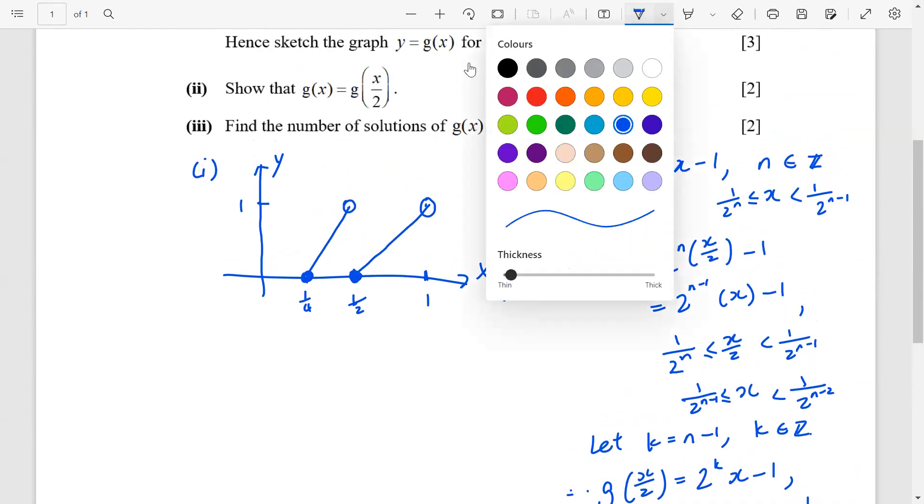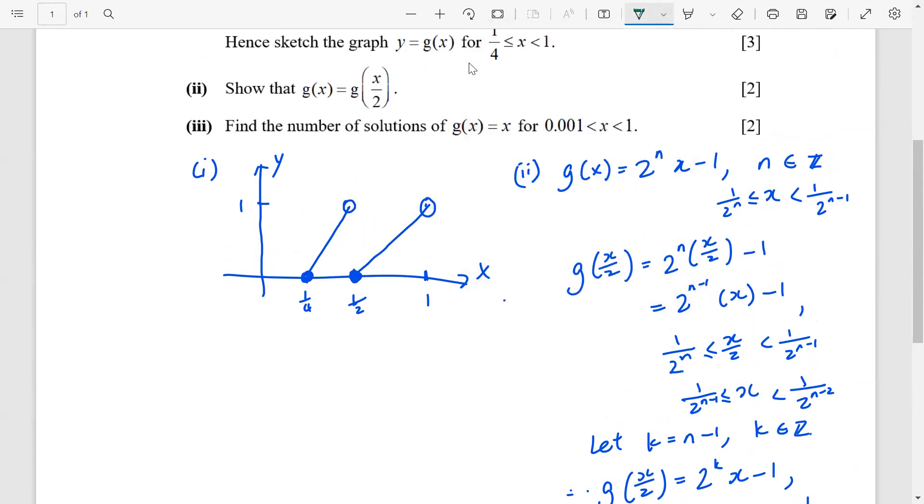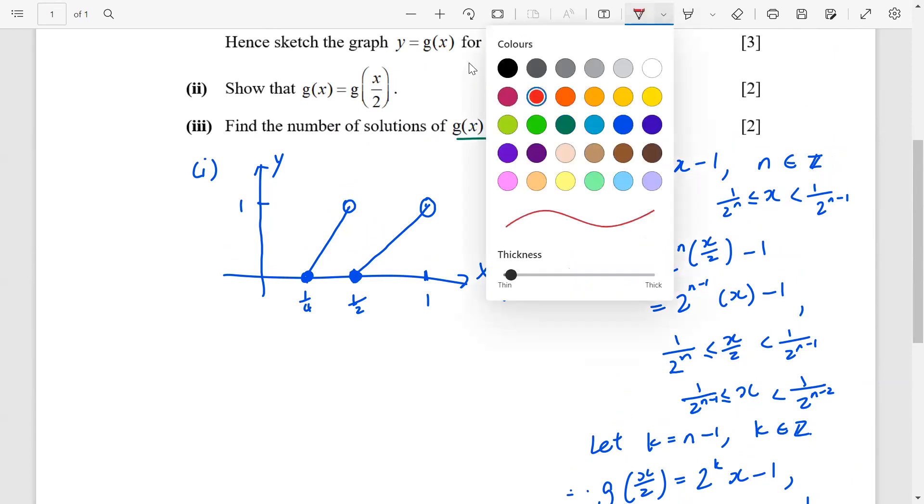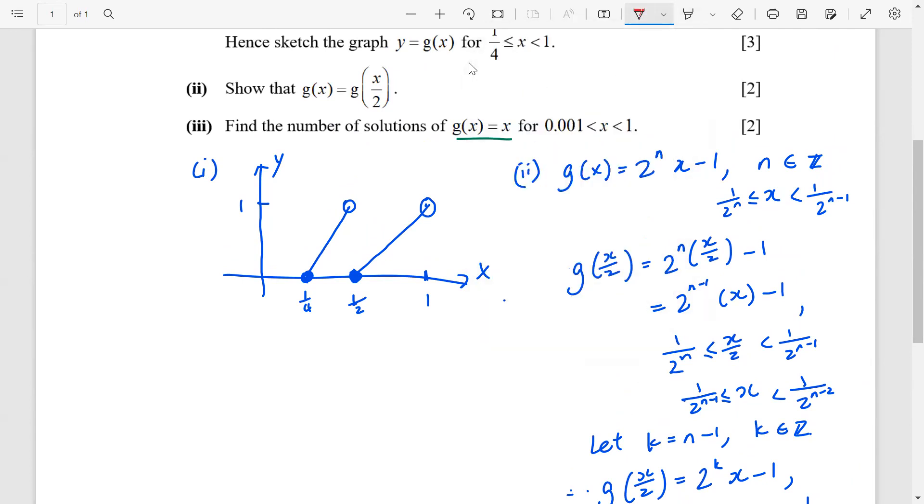Since I used the space on the left, green color here, find the number of solutions for g(x) equals to x. Now, you see that, based on number 1, this part 1, question, part 1 answer. If I were to sketch y equals to x, it will be something like this. This is your y equals to x.